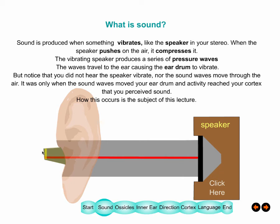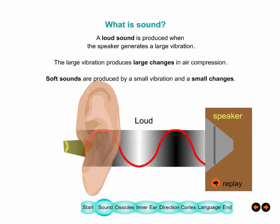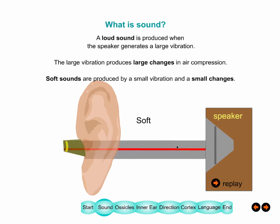Every time the speaker pushes out it compresses the air, and those compressions cause the eardrum to vibrate, producing activity inside your head. You can see two sounds — one loud and one soft. The speaker vibrates more for the loud sound, producing large compressions in the air, depicted by a larger compression on the trace. Smaller displacements produce smaller compressions and smaller movements on the eardrum.